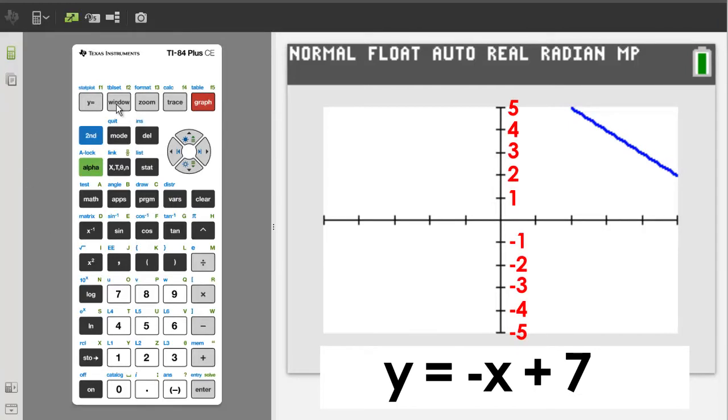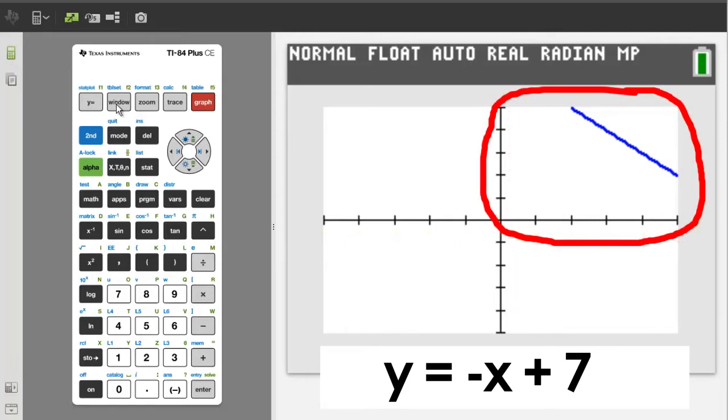On this graph we have five tick marks on the positive and negative y axis and five tick marks on the positive and negative x axis. Looking at the graph we need to add more tick marks to the positive y and the positive x axis.